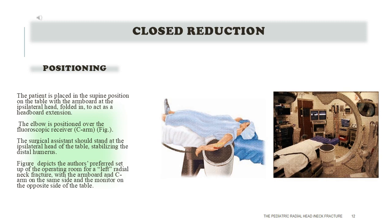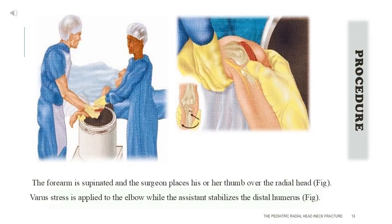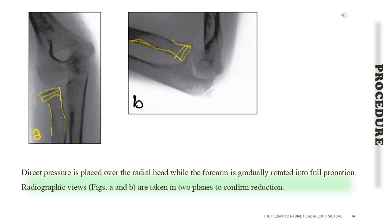Closed Reduction — Positioning: the patient is placed supine with the arm board at the ipsilateral head, folded in to act as a headboard extension. The elbow is positioned over the fluoroscopic receiver (C-arm). The surgical assistant stands at the ipsilateral head stabilizing the distal humerus. Technique: the forearm is supinated and the surgeon places his or her thumb over the radial head. Varus stress is applied to the elbow while the assistant stabilizes the distal humerus. Direct pressure is placed over the radial head while the forearm is gradually rotated into full pronation. Radiographic views are taken in two planes to confirm reduction.